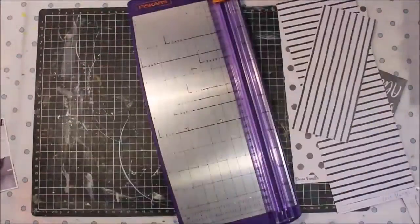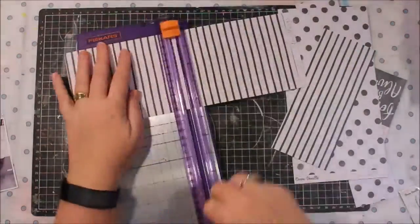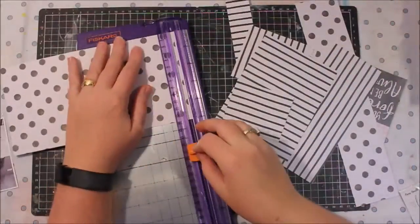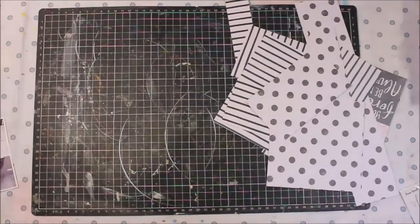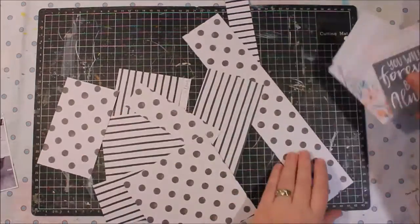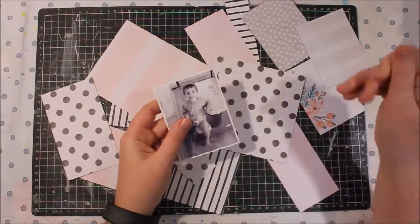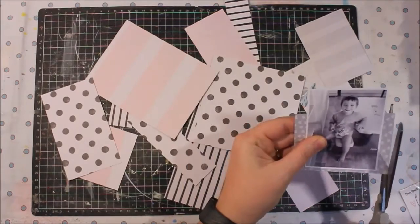And that's going to form one area of the cluster, and the other part is going to be where the photo is. So I'm just randomly trimming some sizes of paper here, so that I can build this cluster. And the Project Life cards are also going to form part of the cluster as well.